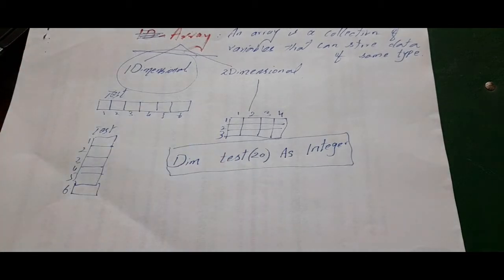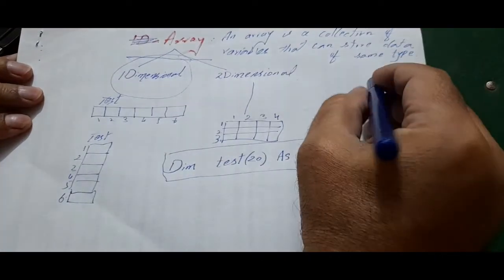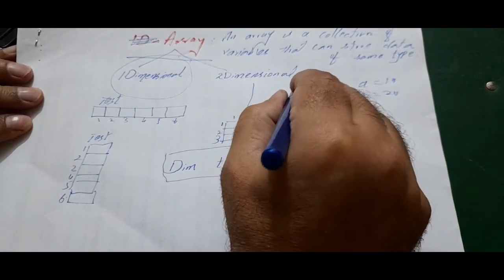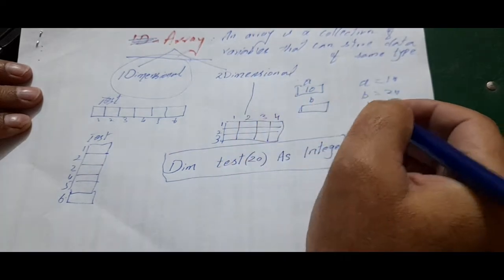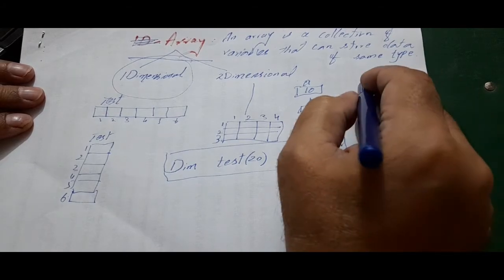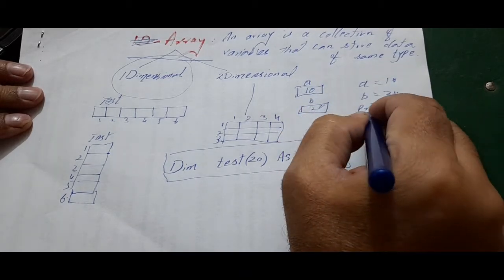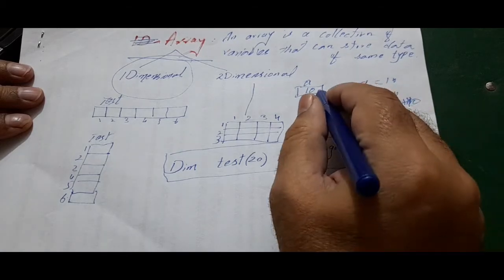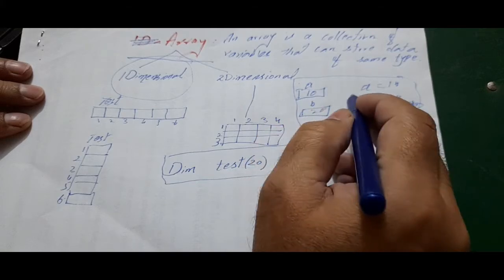When we declare this array, at the back end the OS makes a block of memory. When we define simple variables like A = 10 and B = 20, the OS allocates a memory area for that variable, gives it the name A, and stores the value 10. The same is the case with B: the OS makes a location in memory, gives it the name B, and stores the value 20. Whenever we reference these variables, their value will be displayed or updated.